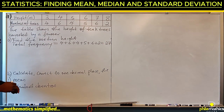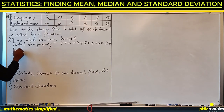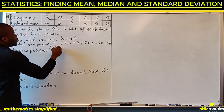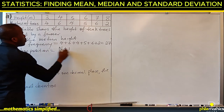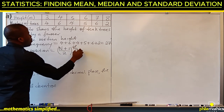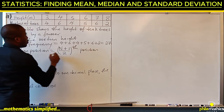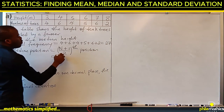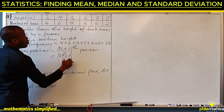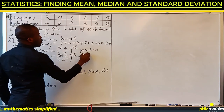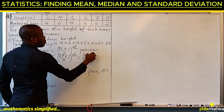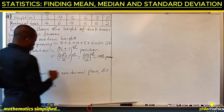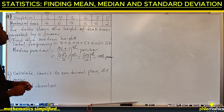Since the total is odd, the median position is given by (n + 1) / 2. With n equal to 27, that is 28 over 2, which gives us the 14th position.